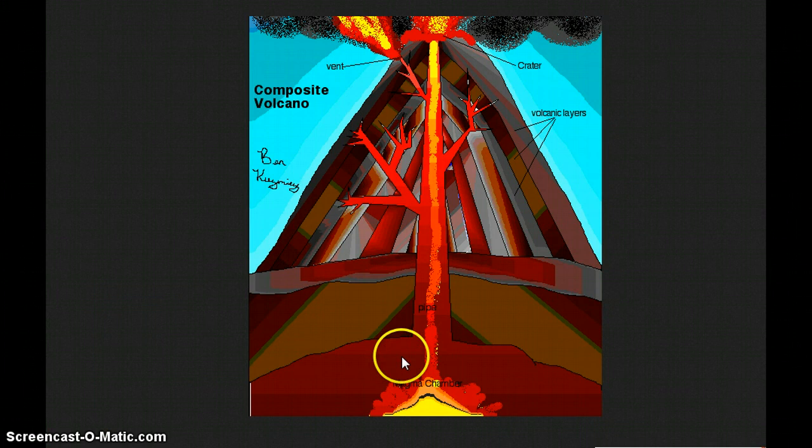But you can see here, this one is quite a bit taller. Magma chamber down here, the magma pipe here, a vent off to the sides. These are different layers. And the crater is right up on the top there.